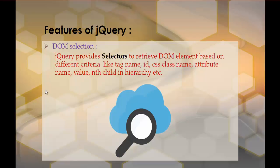jQuery provides selectors to retrieve the DOM element based on different criteria like tag name, ID, CSS class name, attribute name, value, and nth child in a hierarchy. Using those selectors we can identify the element by tag name, ID, CSS class name, attribute name, value, or nth child in a hierarchy. This is how jQuery helps us in identifying the DOM element — that is the first feature, DOM Selection.